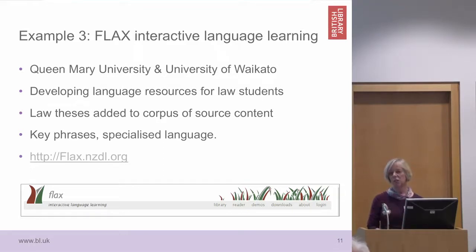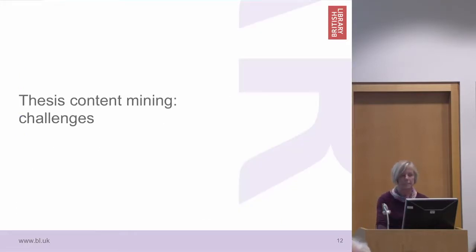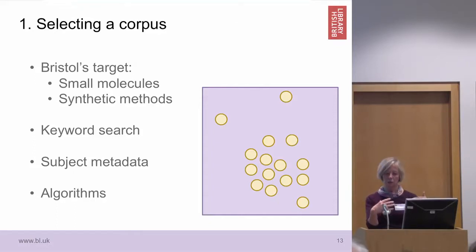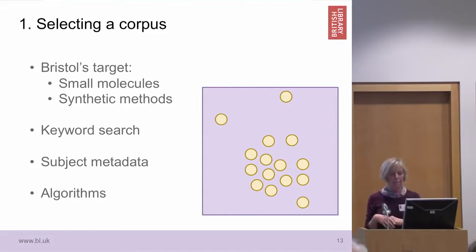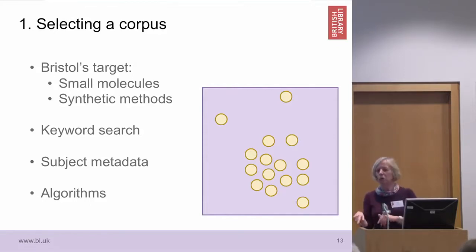FLAX came to us and asked if they could use some UK theses to extract key phrases. The difficulties are real: we've got all these theses spread across different universities and a big bucket of them at the British Library. The first question is how do you find the ones you want out of 130,000 — or maybe you just select them all? Bristol and the Royal Society of Chemistry really wanted just the chemistry theses that might contain a chemical compound, but of course we don't know that until they've done the text mining.